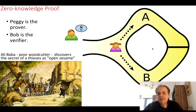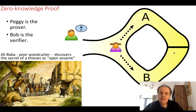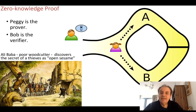She could have gone along A, and when Bob asks her to reveal herself through B, she would open the secret passageway and go back along B. But if she had already been in B and Bob asked her to return through B, she has not actually verified herself. Bob continues to do this repeatedly, and every single time Peggy is able to reveal herself through the secret passageway, Bob increasingly knows that she knows the passphrase.